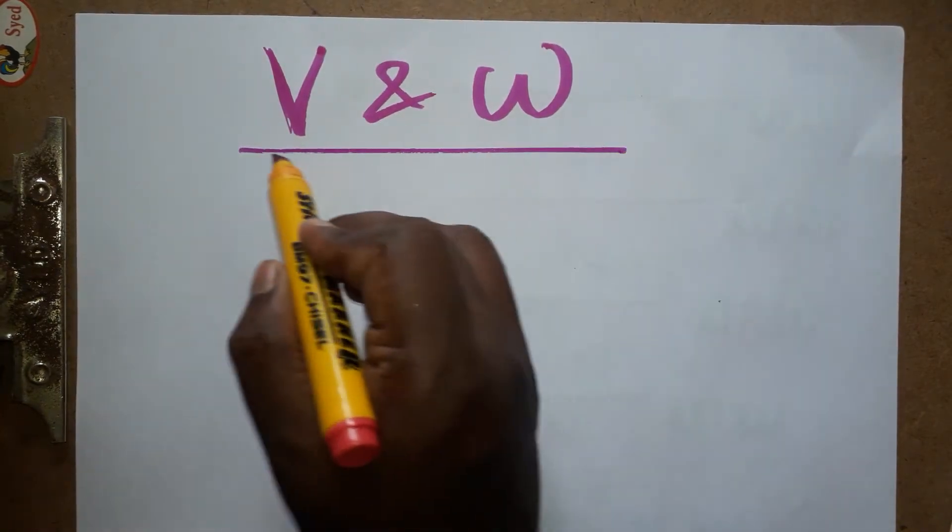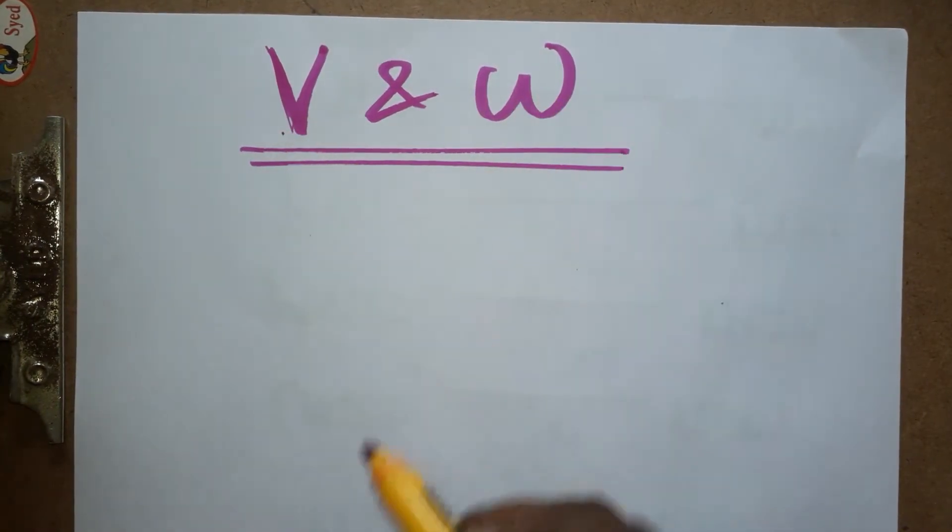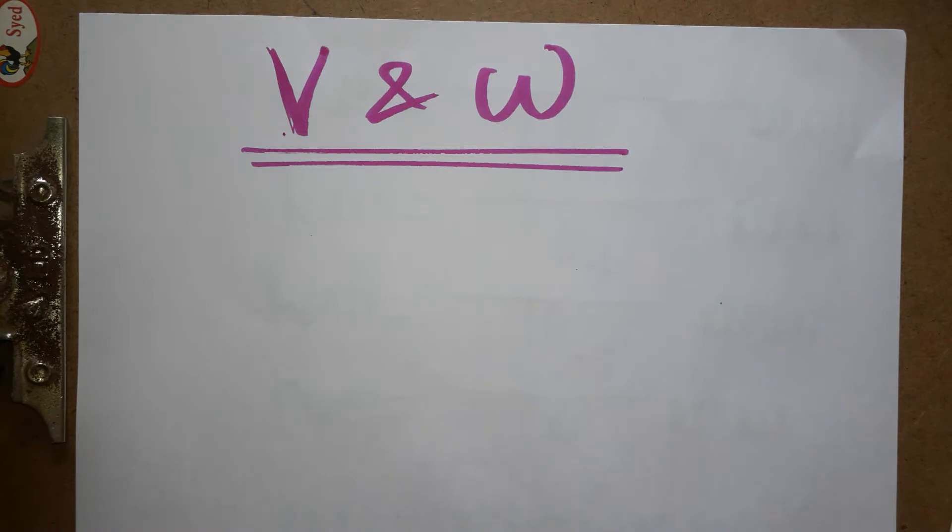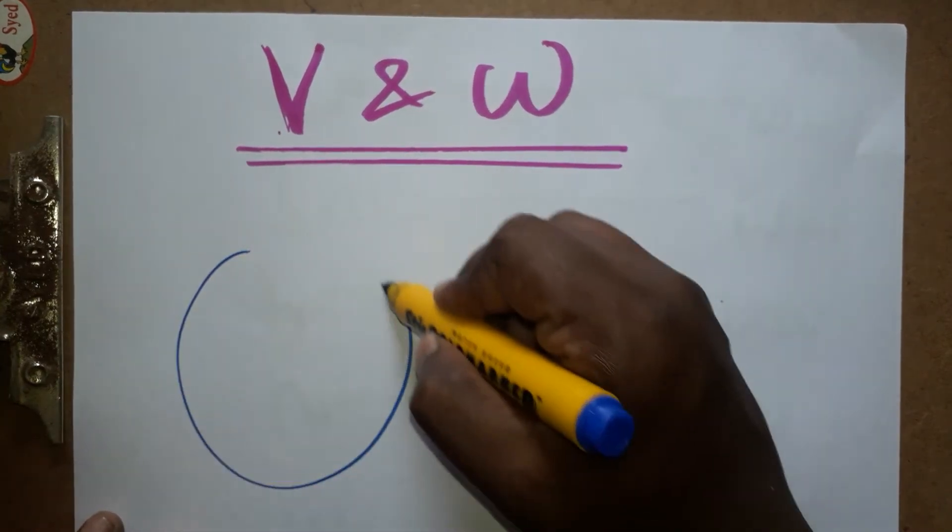Today we are going to learn how to derive the relation between linear velocity and angular velocity. Angular velocity represents velocity in rotational motion, linear velocity represents velocity in linear motion for an object moving in...